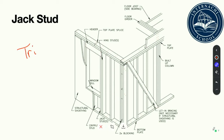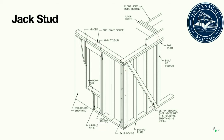Jacks fit under each end of a header and transfer the load that the header carries down to the bottom plate and the framing beneath. Sometimes jack studs must be doubled on wide openings so there's enough supporting surface for the header to bear on. Jacks may be replaced with a steel header hanger attached to the king stud if the code permits.